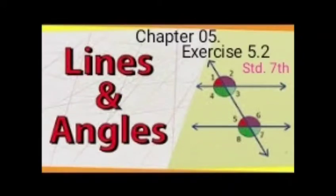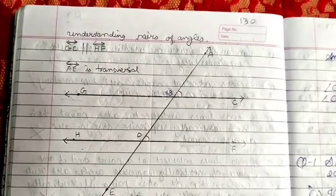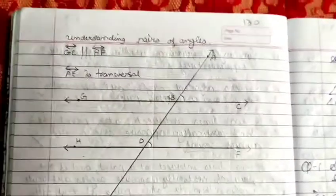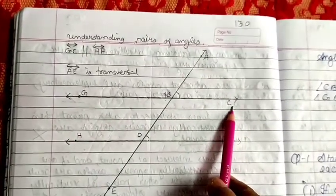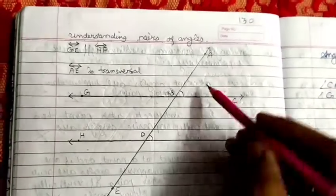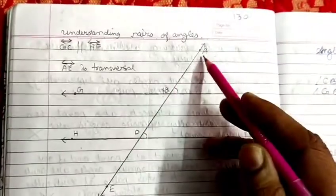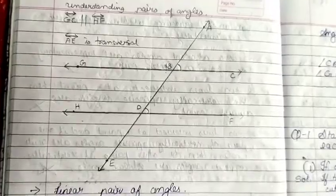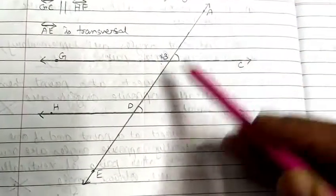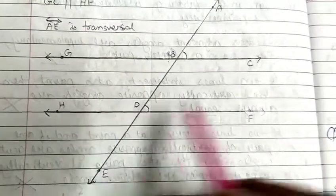Let us start Exercise 5.2 of chapter Lines and Angles. In this we will understand the various pairs of angles. Here, line GC is parallel to line HF. Another line AE cuts these parallel lines and is known as a transversal. This transversal line AE intersects the parallel line GC at point B and HF at point D.